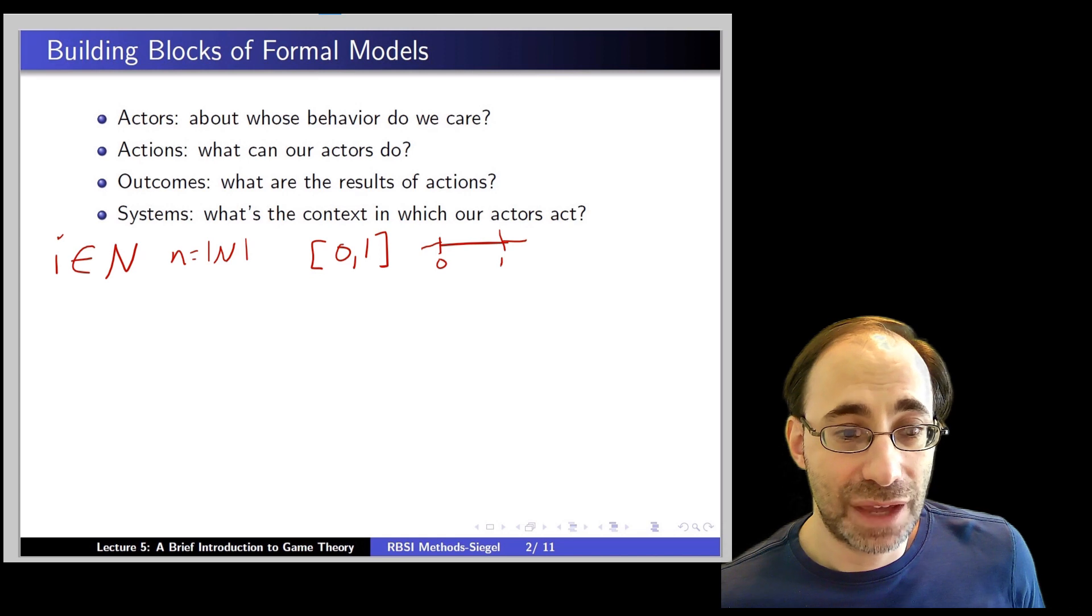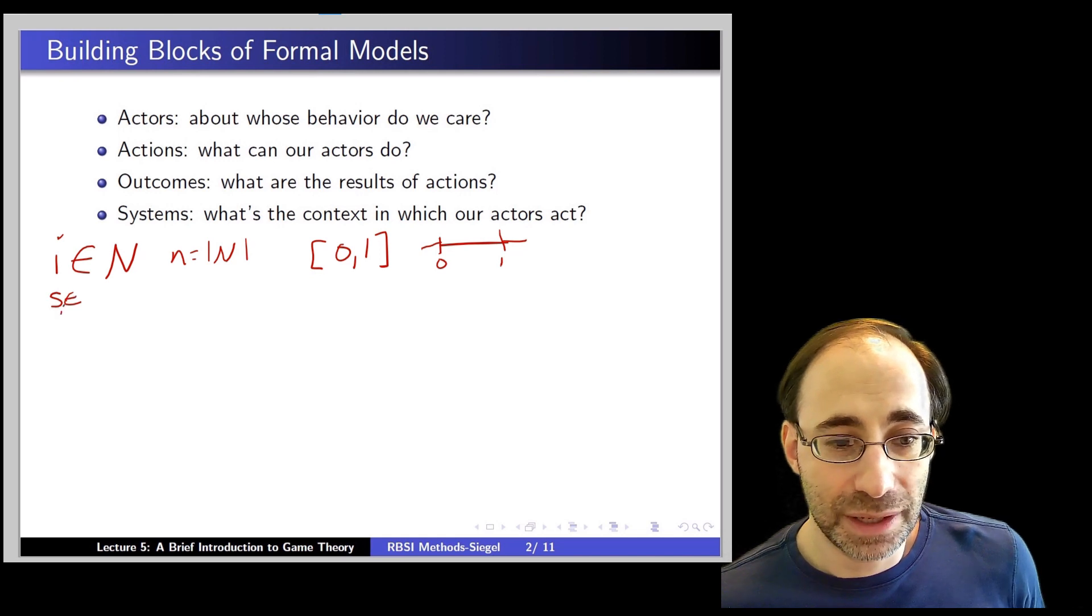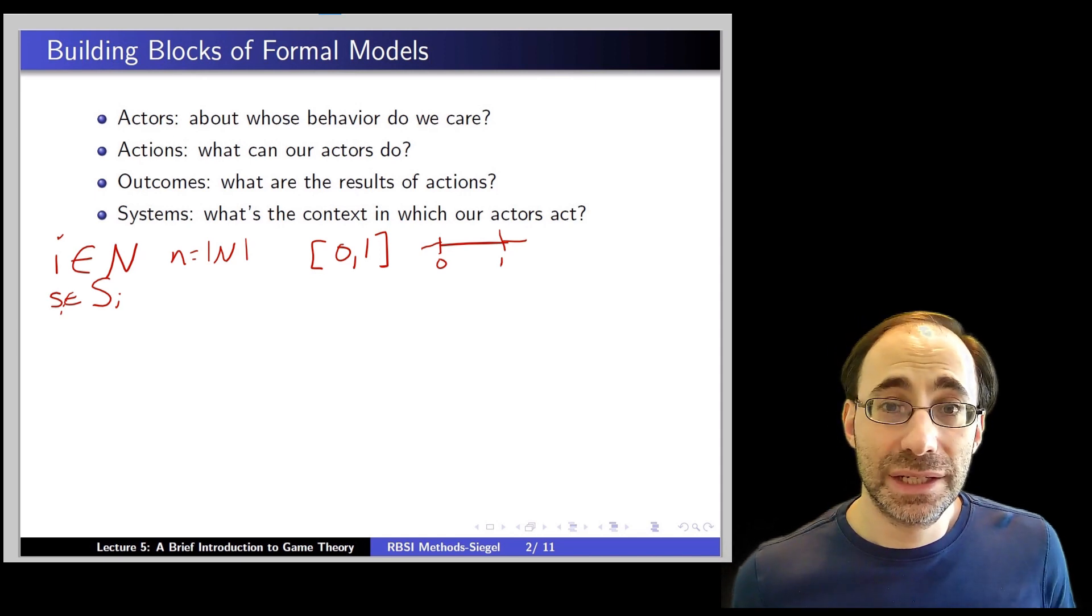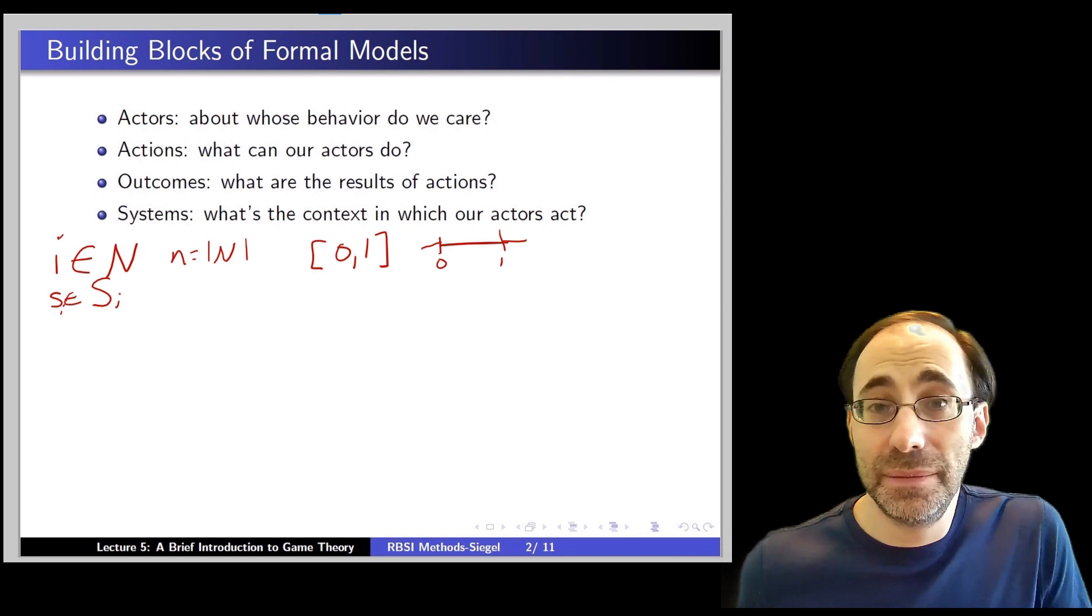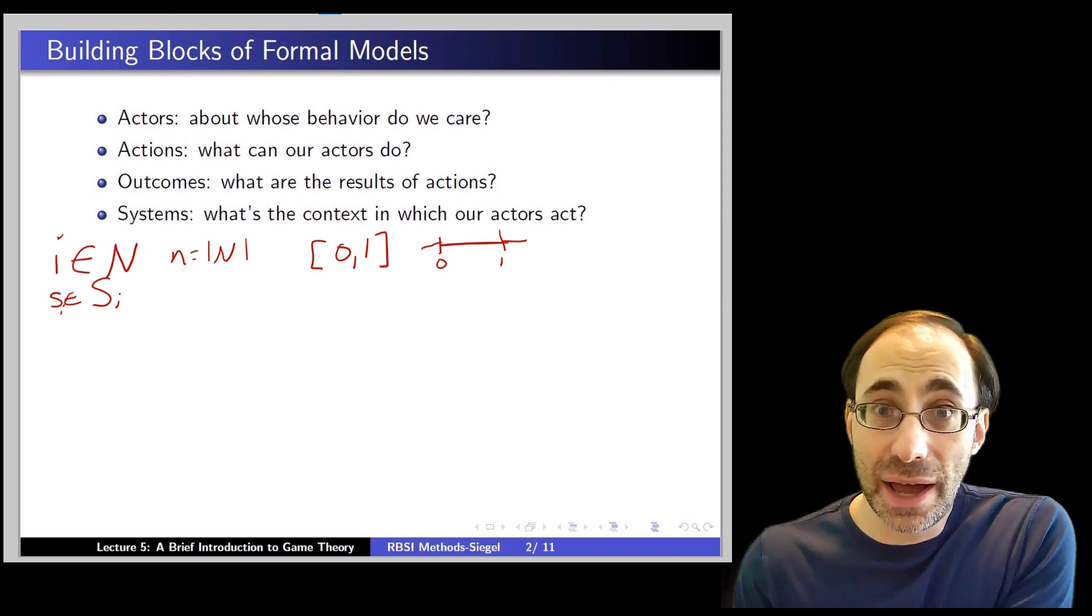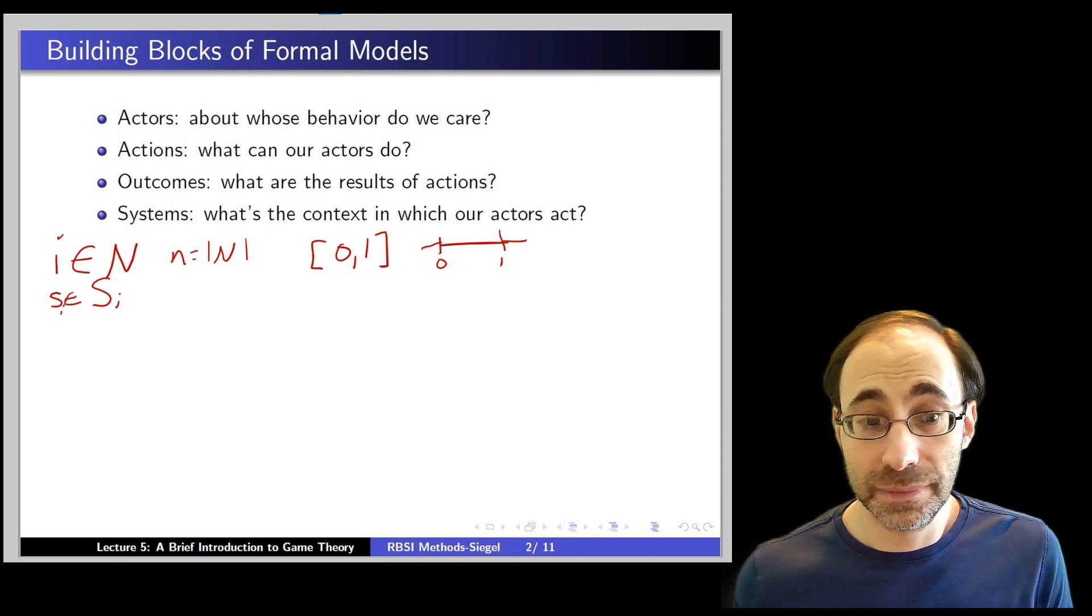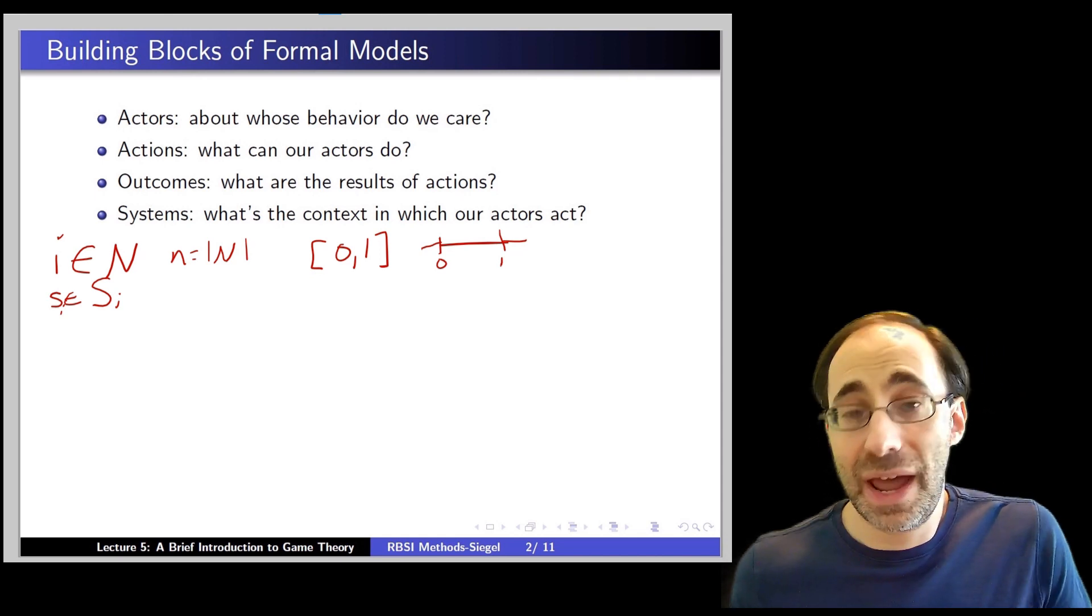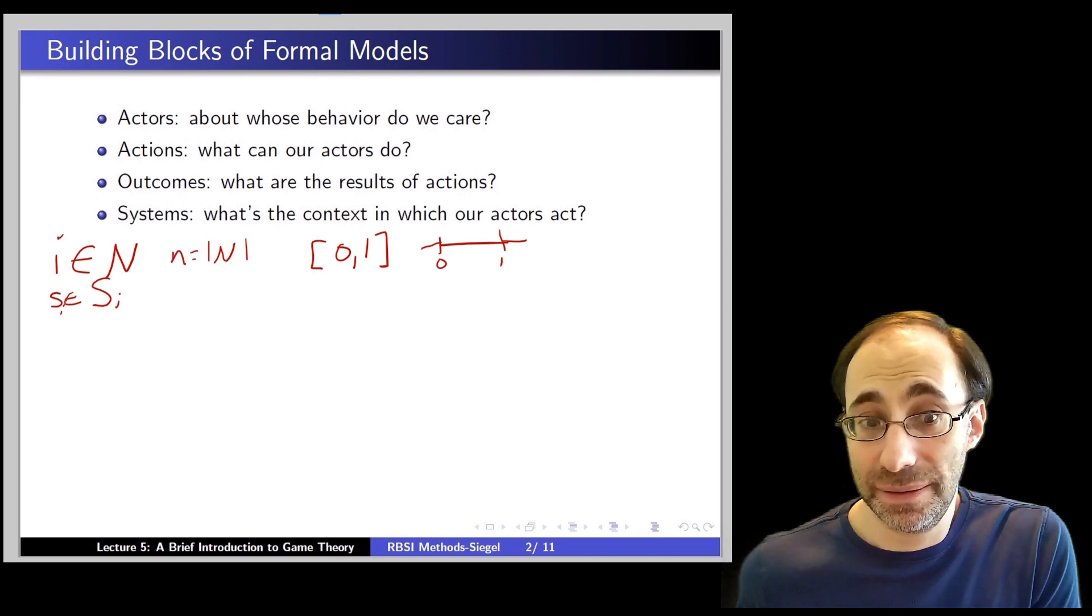So, actions, we again can have a similar type of notation. We might let little s sub i be some element in some big S sub i. And what does that mean? Well, here big S sub i are the set of all strategies or actions that actor or player i might take or has available to take in this model. Little s sub i is the particular action that actor i is taking or it's an element in the set of all possible actions that i could take.